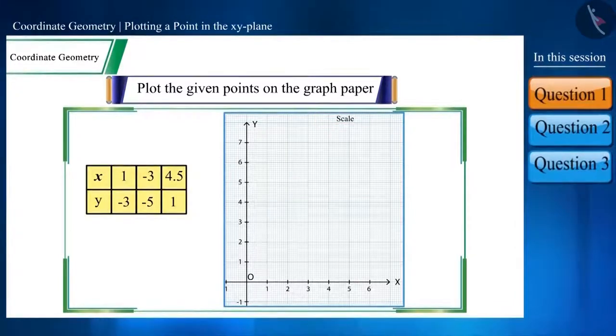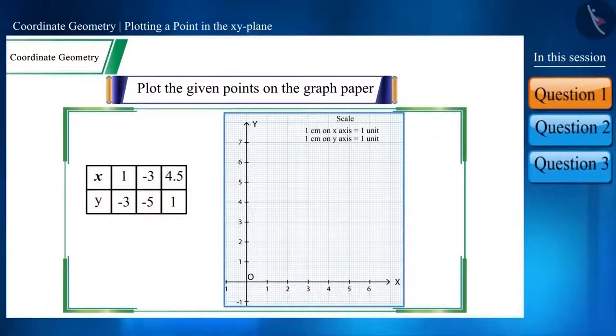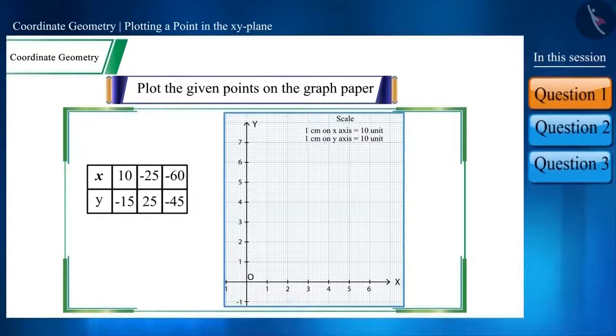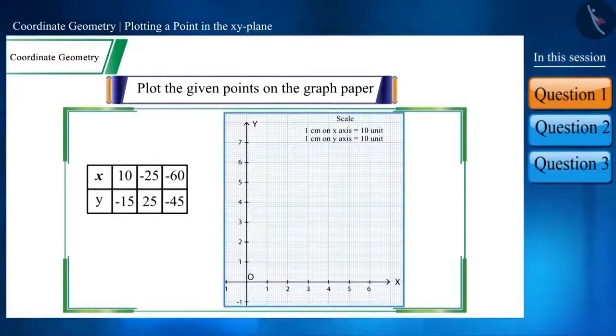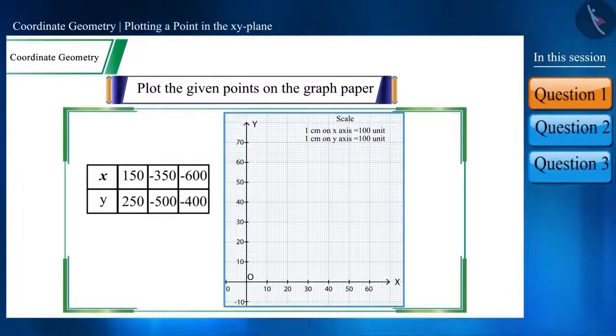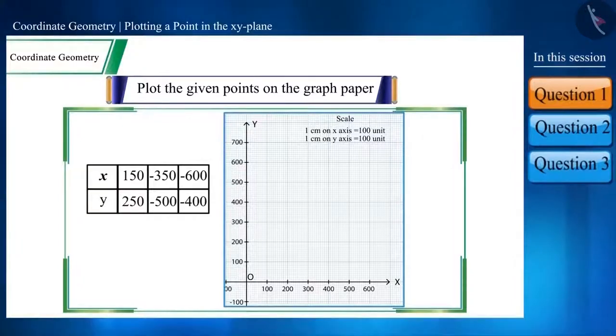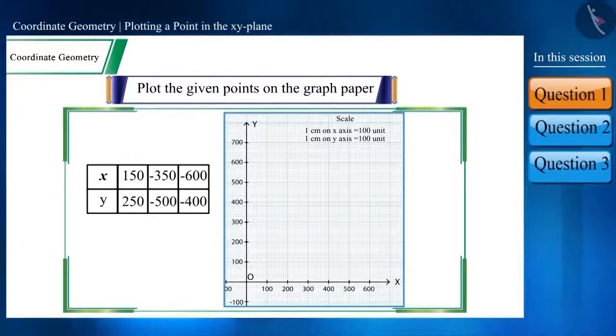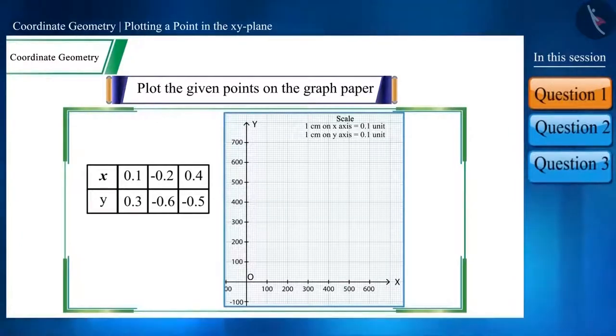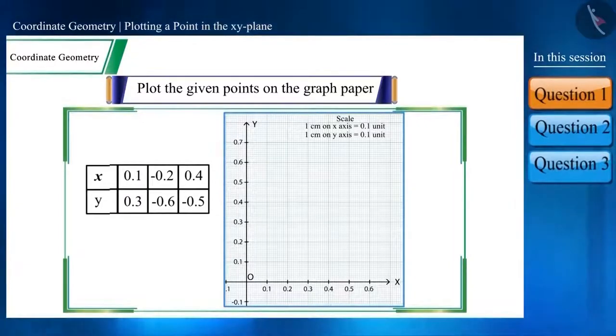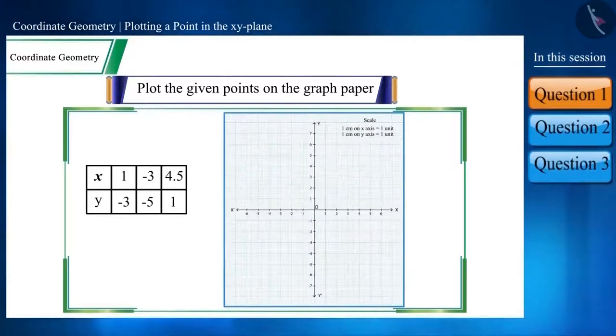As these numbers are between 0 and 10, we take 1 cm equals to 1 unit. If this point was between 0 and 100, we would have taken 1 cm equals to 10 units. And the point being like this, 1 cm equals to 100 units. Can you tell me what we would have done if these points or numbers were in decimals? Then we would have taken 1 cm equals to 0.1 unit. We will write numbers here taking 1 cm equals to 1 unit.